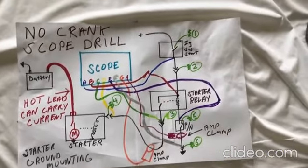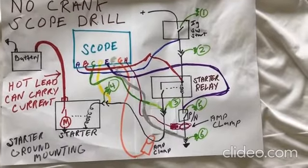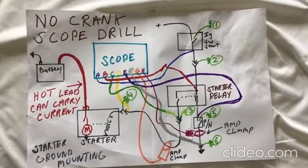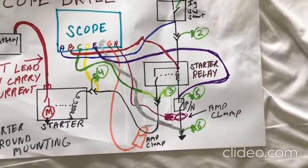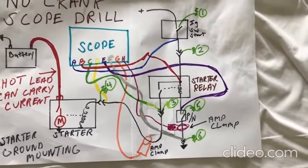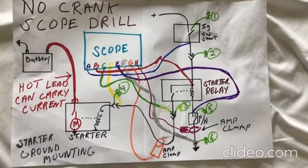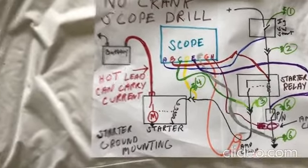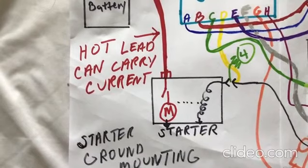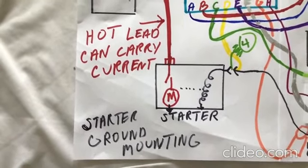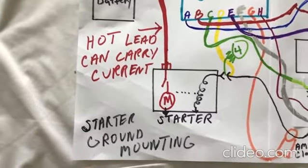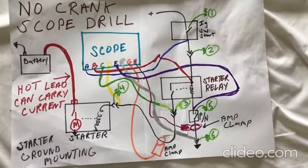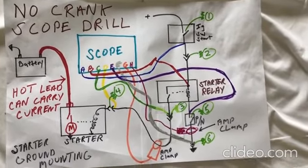Channel E, purple, is at the input side of the park neutral switch, which should be closed in park or neutral to complete the circuit through the starter relay. Channel F, gray, is at the ground connector where the starter relay grounds. Channel G is an amp clamp — that is the current flowing from the starter relay to the starter solenoid to create the magnetic field to latch the starter. You can see the starter solenoid, that's the black coily-looking thing there, and the starting motor is the red. Channel H, burgundy, is an amp clamp around our control circuit, which basically validates that our circuit is complete through the control side of the relay.